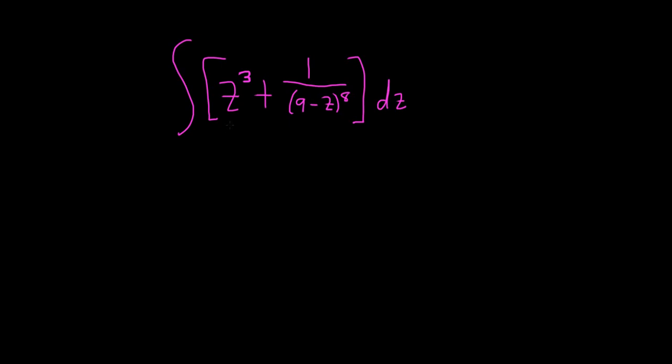So first of all, we have to integrate z cubed. That's really easy to do, and we can just use the power rule. Let's write that as the integral of z cubed dz. So this one will be easy, plus,